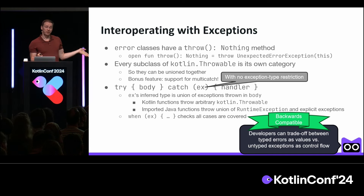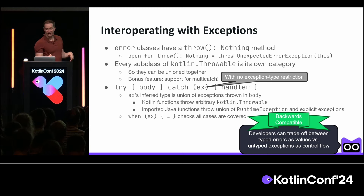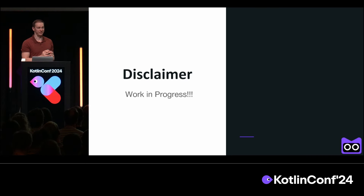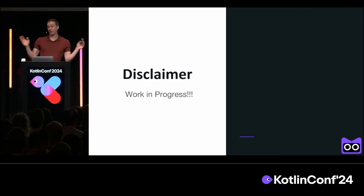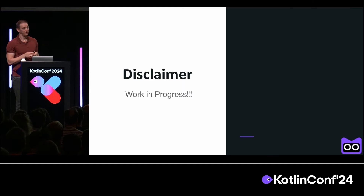This design gives a way for developers to trade off between explicit typed error values and implicit untyped exceptional control flow, in a way that is backwards compatible with Kotlin as it is now and Java interop as it is now. That is one of the features we're looking to add. If you want to know more about what we're considering, feel free to come find me afterwards or during the Q&A.